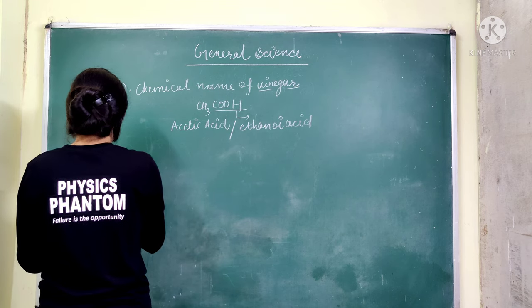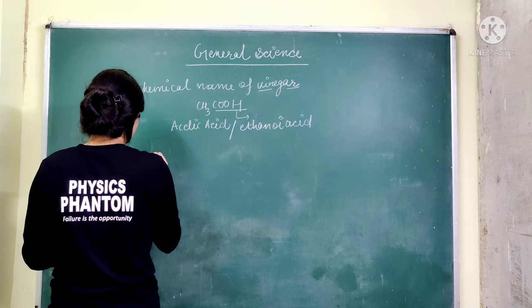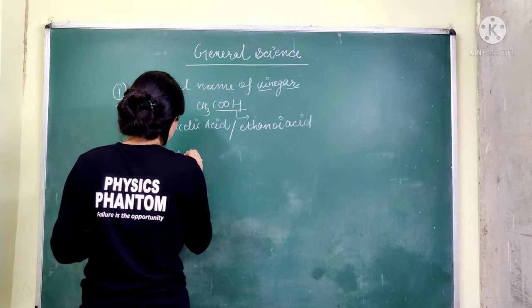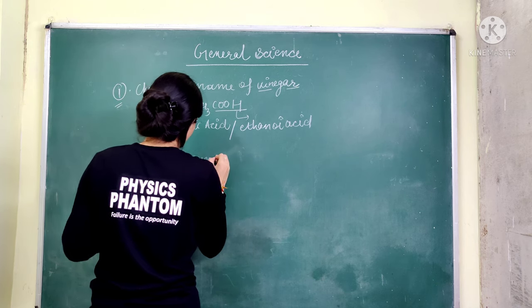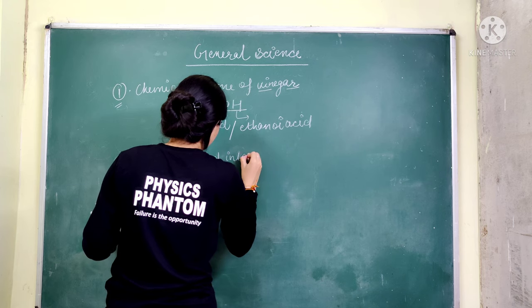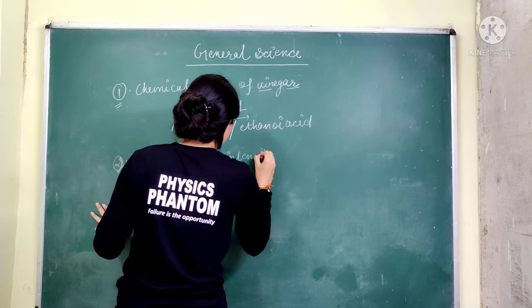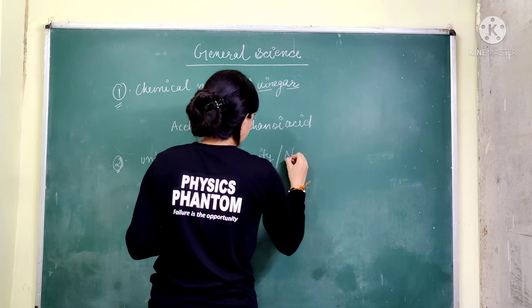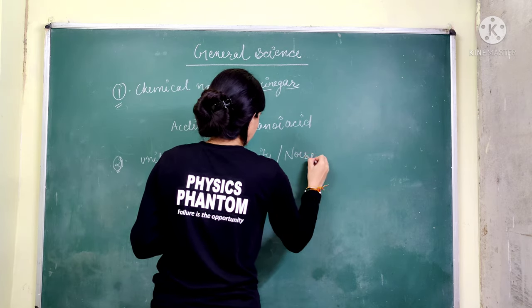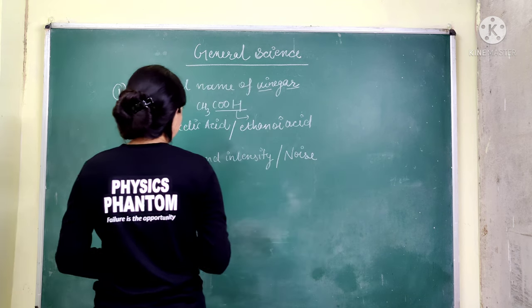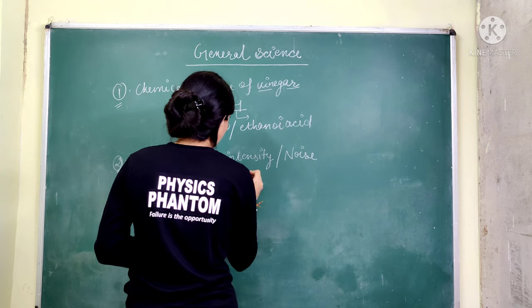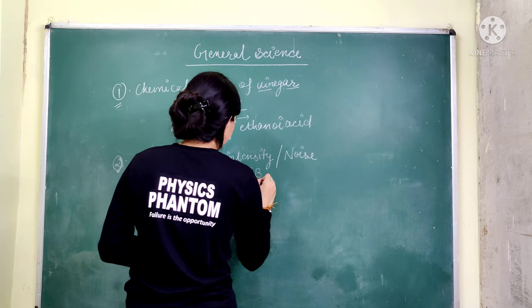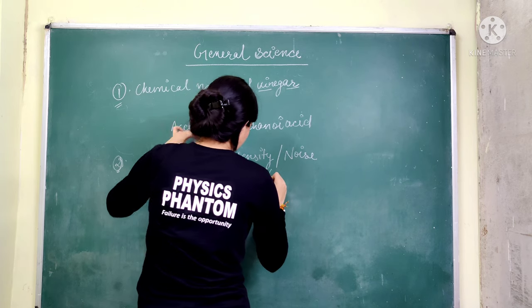The second question is: what is the unit of sound? Whether the question asks about intensity of sound or noise, the answer is the same. The unit of sound intensity or noise is the Decibel. We denote it as dB.